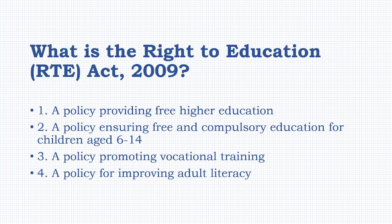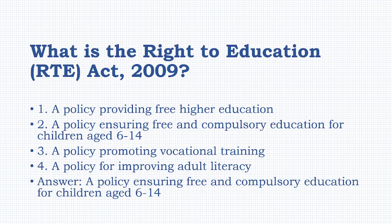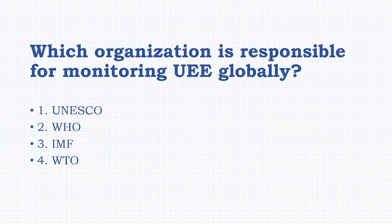What is the Right to Education (RTE) Act 2009? Options: a policy providing free higher education, a policy ensuring free and compulsory education for children aged 6 to 14, a policy promoting vocational training, a policy for improving adult literacy. The answer is: a policy ensuring free and compulsory education for children aged 6 to 14 years.